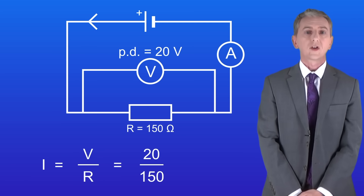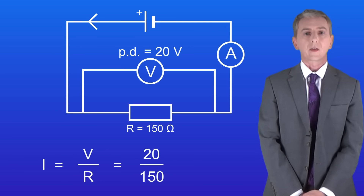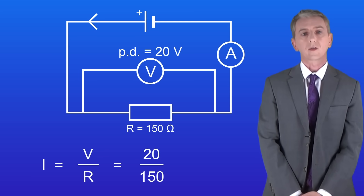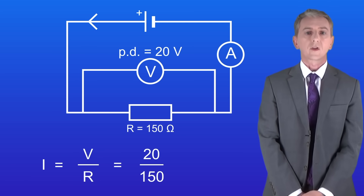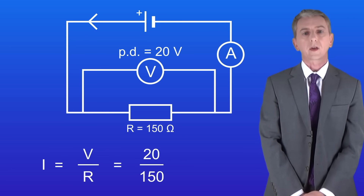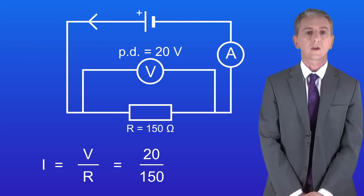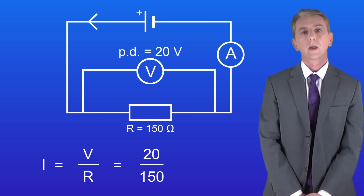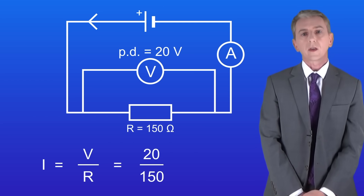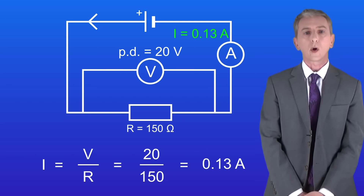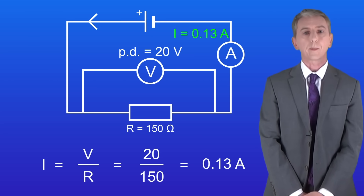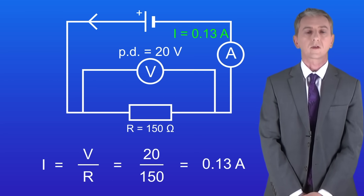Going back to our equation we can now calculate the current in this circuit. The potential difference is 20 volts and the combined resistance is 150 ohms. Putting these into the equation gives us a current of 0.13 amperes to two decimal places.